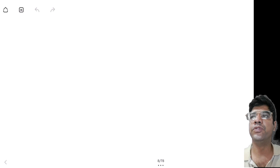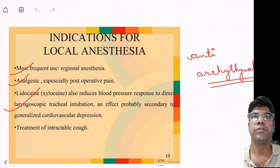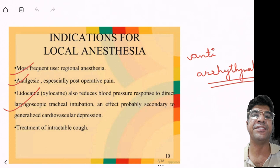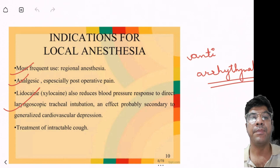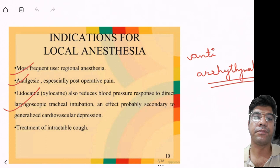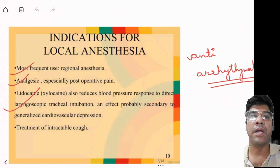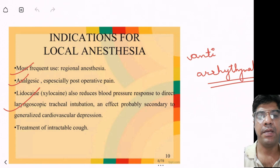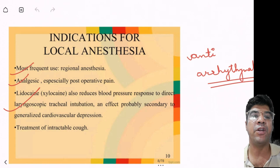Let us discuss the indications for the use of lignocaine in dentistry. Local anesthetic is used when removing a tooth, whether it is simple extraction or complex surgical extraction, for cavity fillings, local anesthesia is often applied to numb the area around the tooth. It is used in root canal therapy involving removal of the damaged pulp from inside the tooth, while preparing crowns and bridges, and while performing gingival graft or periodontal scaling and root planing.